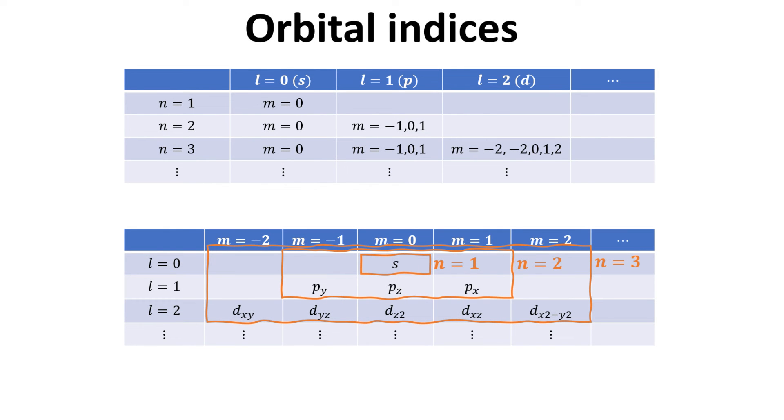With a bit of reordering, we arrive at the new table. For n equals 1, we have only 1 s orbital. For n equals 2, we have 1 s orbital and 3 p orbitals. For n equals 3, we have 1 s orbital, 3 p orbitals, and 5 d orbitals. In what follows, we shall visualize these different atomic orbitals.